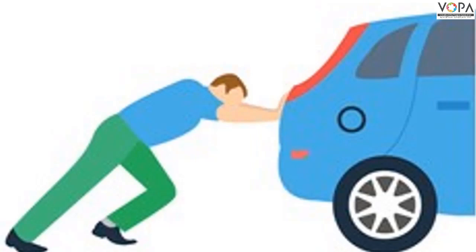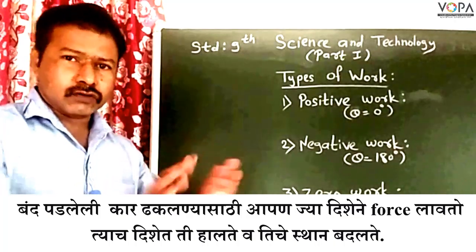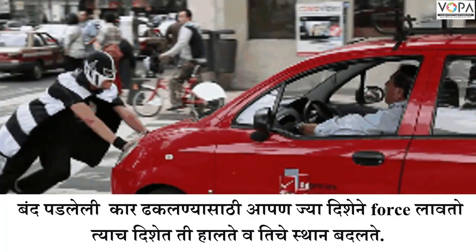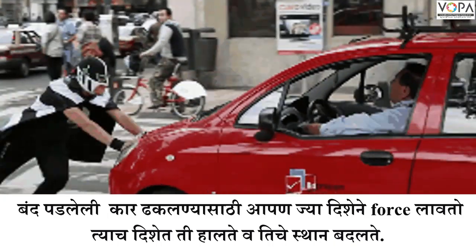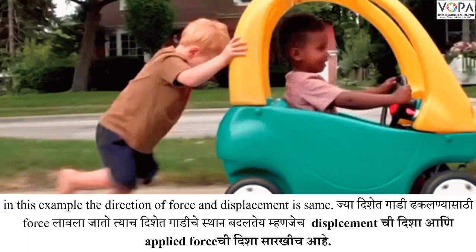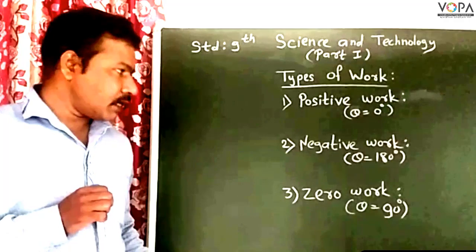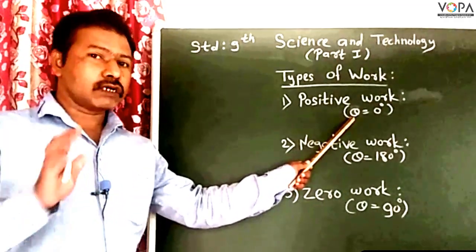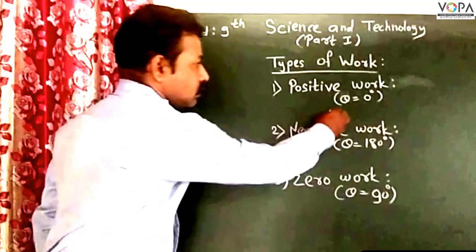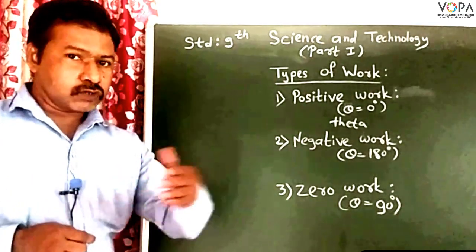A simple example: pushing a stalled vehicle. When a vehicle breaks down and you push it, the force applied and the displacement are in the same direction. So the work done is positive. In this case, the angle between force and displacement is zero degrees. This angle is denoted by the symbol theta, and theta is zero degree for positive work.